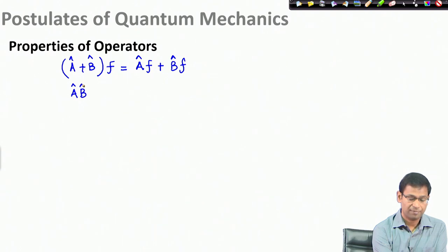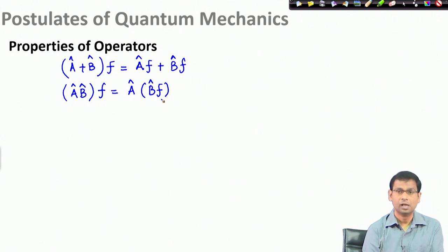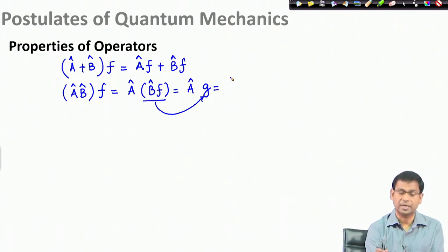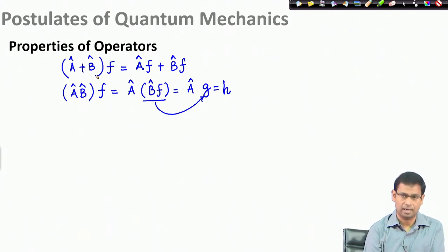Similarly there is a product rule. If I have operator a multiplied by operator b acting on a function f, then I first apply operator b onto f — which may give a function g. Then this function g is acted upon by operator a, and it may give another function h. So the product rule means operators are applied from right to left in sequence. We would now apply these two rules by taking two operators and an example function.